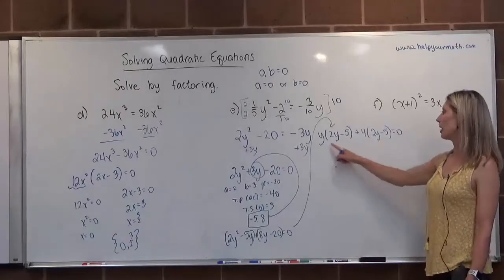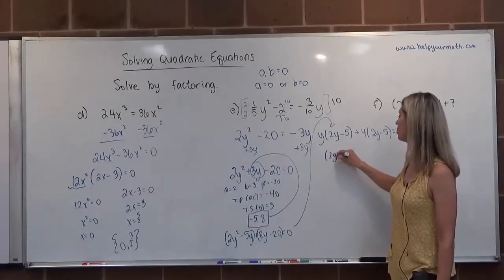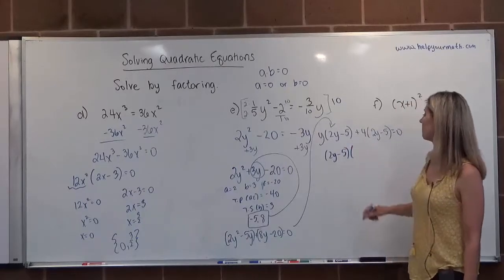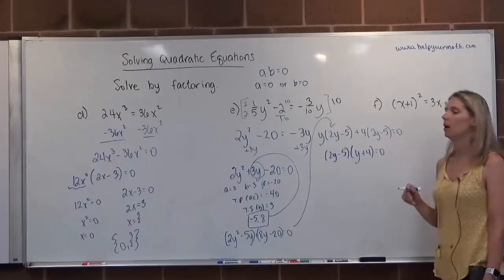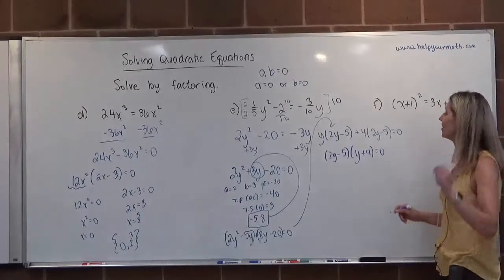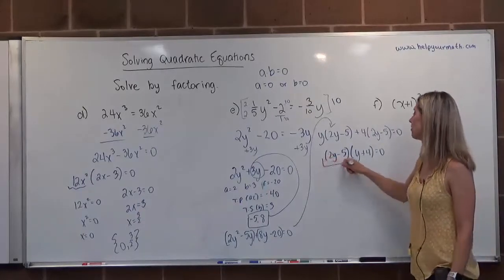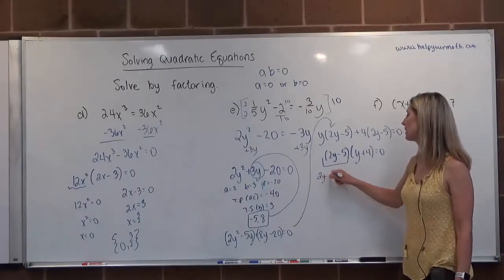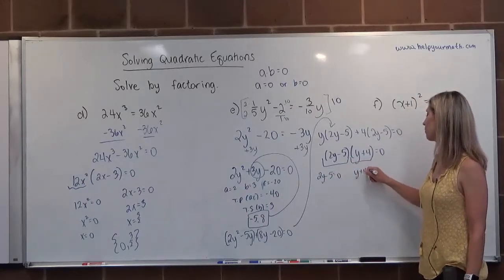I see that the two terms have a GCF of 2y minus 5. So I'm going to pull that GCF out in front, put the leftovers behind it. So it's getting multiplied to y and to 4. We now have two things that when we multiply them, their product is 0. So that means either this thing is equal to 0, 2y minus 5, or this thing is equal to 0, y plus 4.